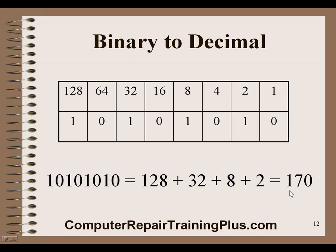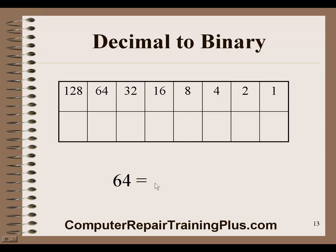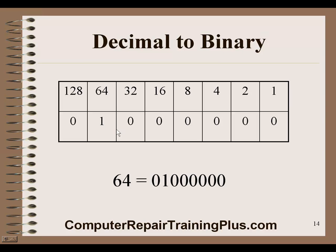Let's start with the number 64. What would decimal 64 look like in binary form? We need to set the 64 bit and leave all others as 0. So our binary number is 0, 1, and then the rest zeros — 01000000. The 64 bit is the only one we need to set. That's not too hard. Let's try another one.